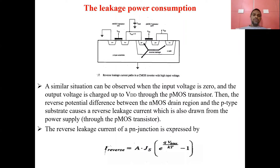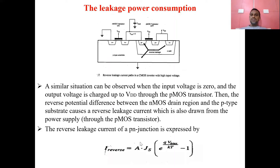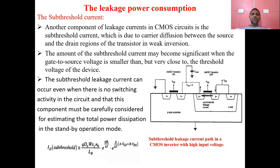The formula for reverse leakage current of a PN junction is: I_reverse = A × Js × (e^(q·V_bias / kT) − 1), where A is the cross-sectional area, Js is the current density, q is the electron charge, V_bias is the biasing voltage, k is Boltzmann's constant, and T is the temperature. This gives the reverse saturation or leakage current when P-MOS and N-MOS are in off condition.